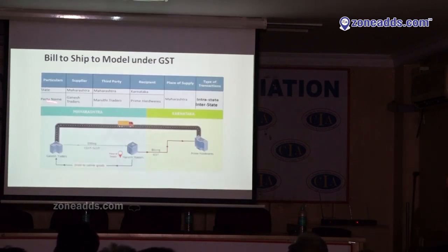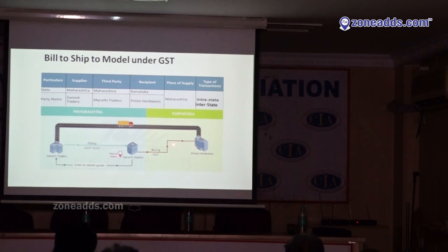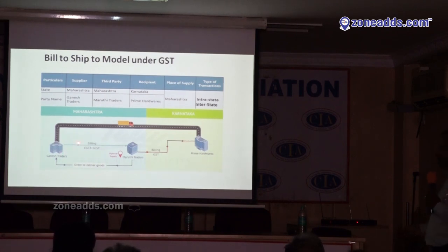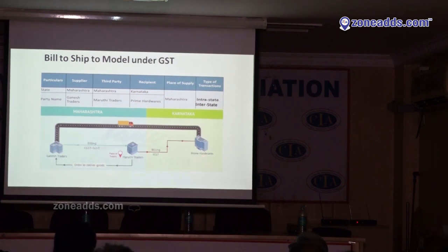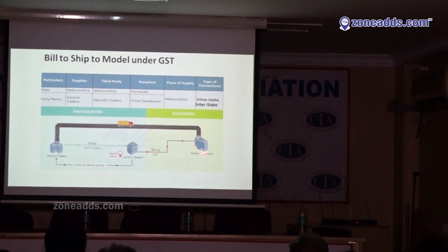This is the bill-to-ship-to model example: the supplier Ganesh Traders is in Maharashtra. The customer Prime Hardwares is in Karnataka. Maruti Traders (also in Maharashtra) orders from Ganesh Traders and asks them to supply directly to Prime Hardwares. This is the bill-to-ship-to model — Ganesh Traders bills Maruti Traders and ships goods to Prime Hardwares. In the E-way bill, the bill-to place contains Maruti Traders' details and the ship-to address contains Prime Hardwares' details.